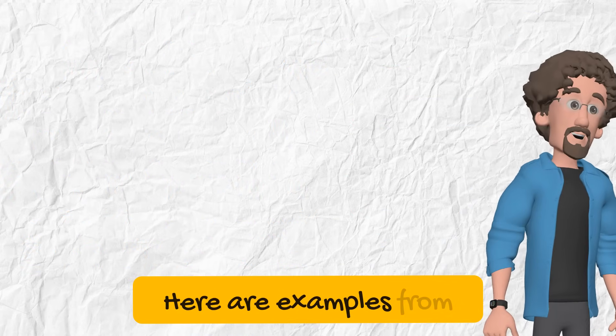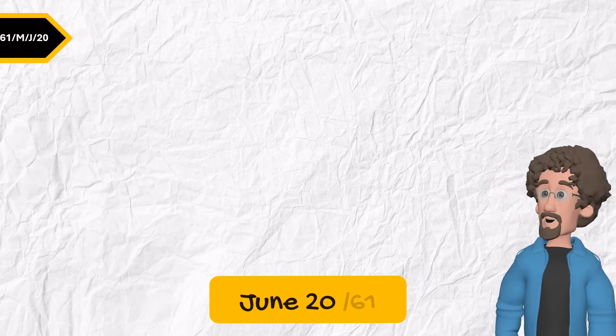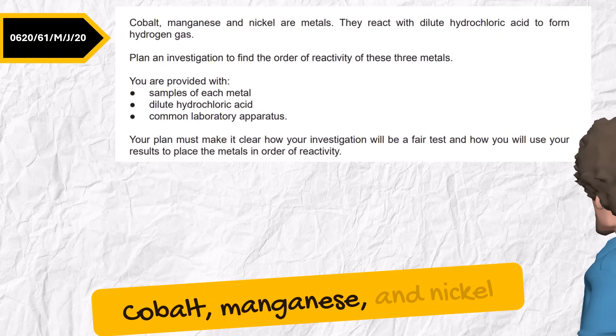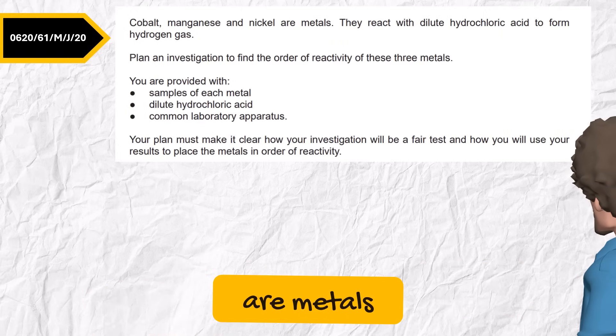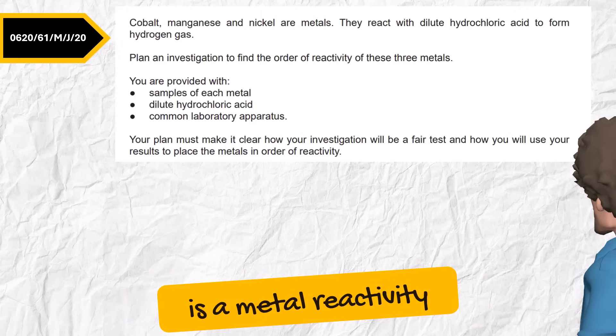Now let's practice. Here are examples from real past exams. Just say the category. June 2020, variant 1, question 4. Cobalt, manganese, and nickel are metals. Plan an investigation to find the order of reactivity of these three metals. Here I'm comparing how metals react, so this is a metal reactivity experiment.